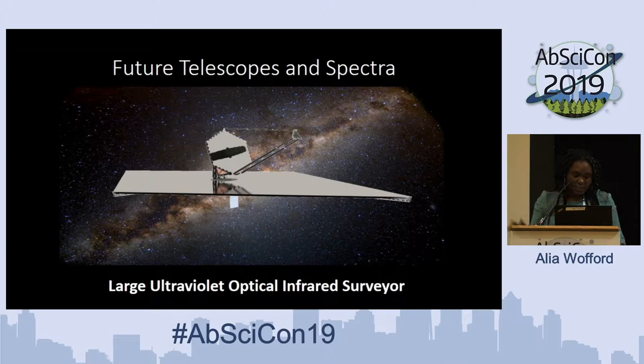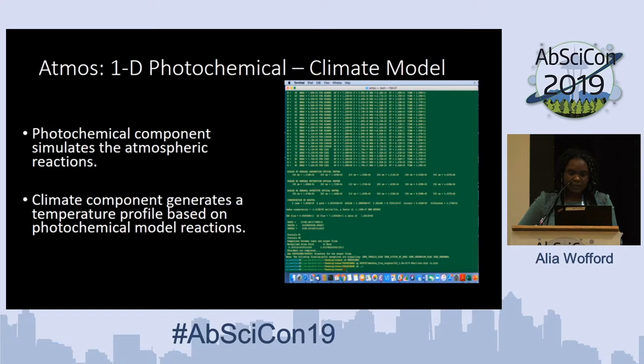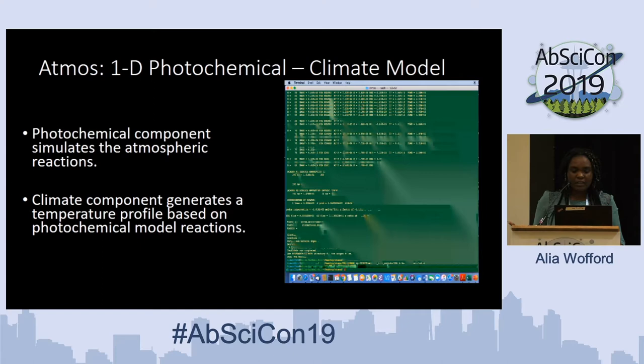As we move forward into flagship missions such as LUVOIR, we're going to rely on them to give us information on how to identify spectral features of exoplanets — particularly whether we can see spectral differences in biotic atmospheres versus abiotic methane production. In our project, we used a model called Atmos, which is a 1D photochemical climate model.